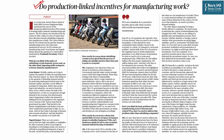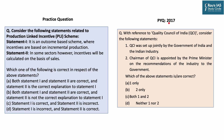This article of The Hindu newspaper appeared on the editorial page and talks about the famous central government scheme of Production Linked Incentive (PLI), on which we have framed a question. Similarly, in 2017, an industry-based question was asked with regard to the Quality Council of India. Today the question says: consider the following statements related to the Production Linked Incentive scheme. Statement 1: it is an outcome-based scheme where incentives are based on incremental production. This term is very, very important.